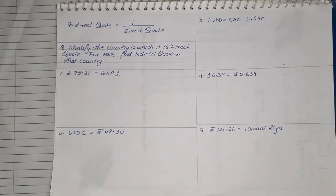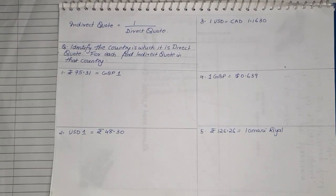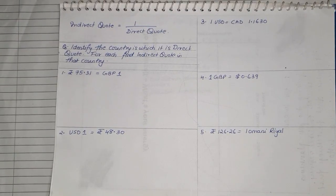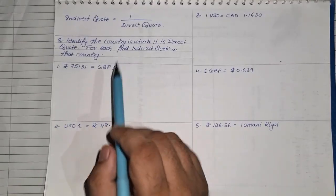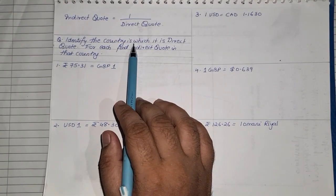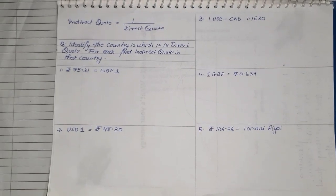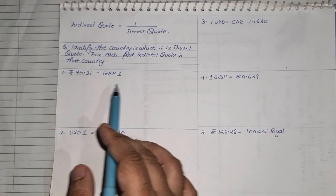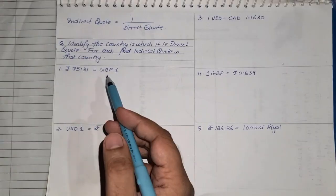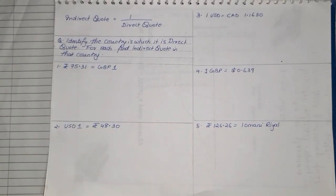Now let us learn how to identify in which country the currency given is in direct quote, and once we are able to identify that, how to calculate the indirect quote. The formula is: indirect quote is equal to 1 upon the direct quote. The question you will get is: identify the country in which it is a direct quote and for each find the indirect quote in that country. So two things we have to find: first identify the direct quote country, then find the indirect quote using the formula.